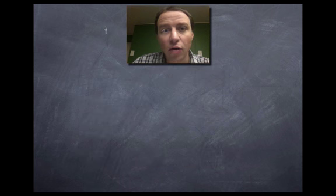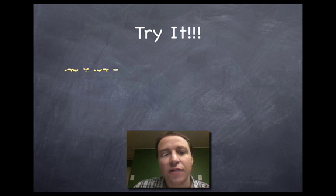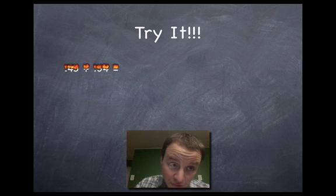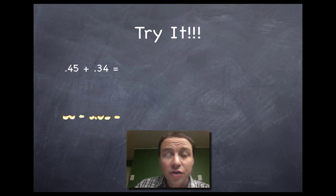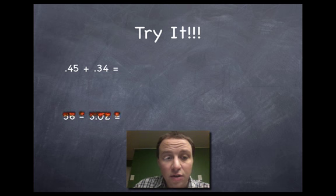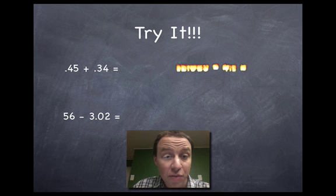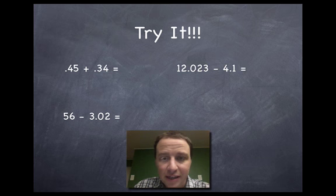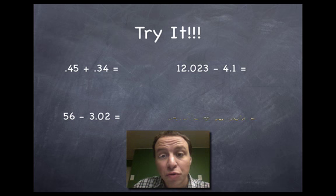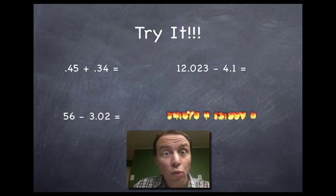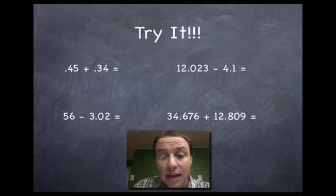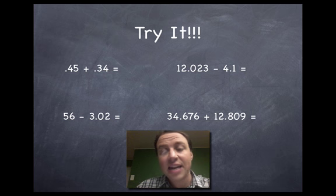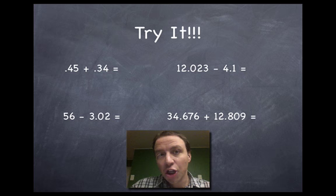Okay. You're going to try it now. Do we have to? Yeah, you got to try it. If you don't practice, you're never going to learn. I got four problems for you here. 0.45 or 45 hundredths plus 0.34 or 34 hundredths. The second one is going to be 56 minus 3.02 or three and two hundredths, however you want to say it. The third one is 12.023 minus 4.1. Ooh, you're going to have to follow some rules for that one. And then the last one, this is the biggest one, 34.676 or 34 and 676 thousandths plus 12.809 or 12 and 809 thousandths.